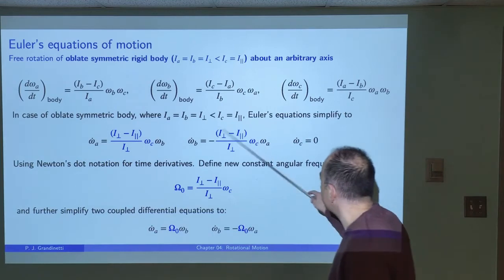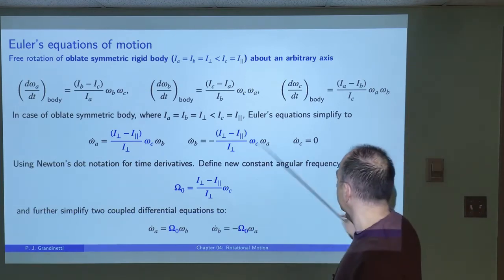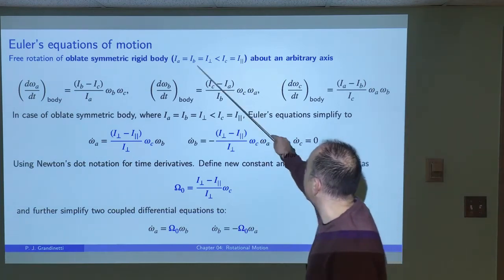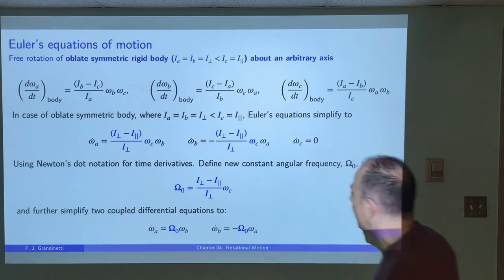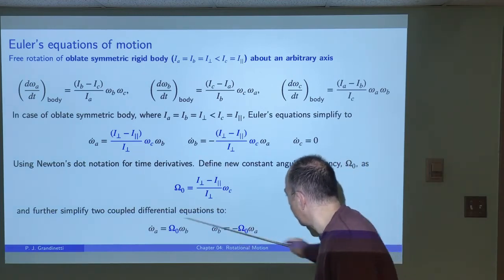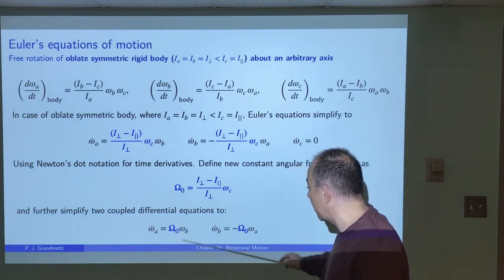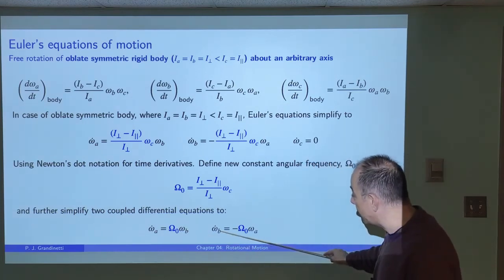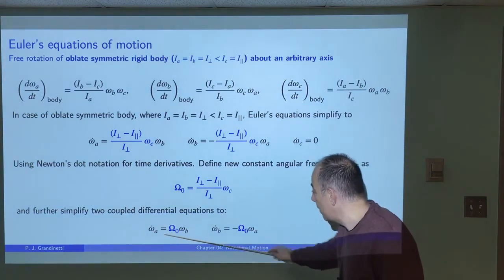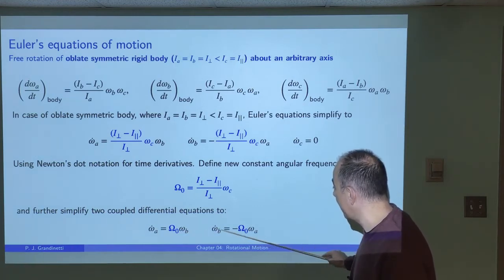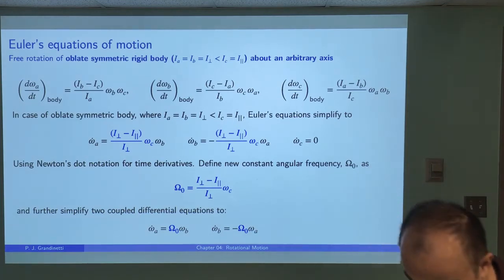To simplify the notation, we define a new constant angular frequency capital Omega_0, using the fact that omega_C is constant and all the moment of inertia values are constants. With this definition, the equations reduce to: omega_dot_A equals capital Omega_0 times omega_B, and omega_dot_B equals minus capital Omega_0 times omega_A. These are two coupled first-order differential equations — one depends on B and the other depends on A — requiring knowledge of the other's solution to solve.